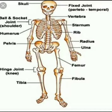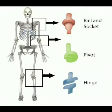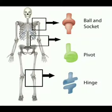All joints in our body, except for a few, can move. Thus we have two types of joints: first is movable joints, and second is immovable joints. In this video we are going to learn about movable joints — those joints where the movement of bones is possible. The movable joints in our body are further divided into four types.